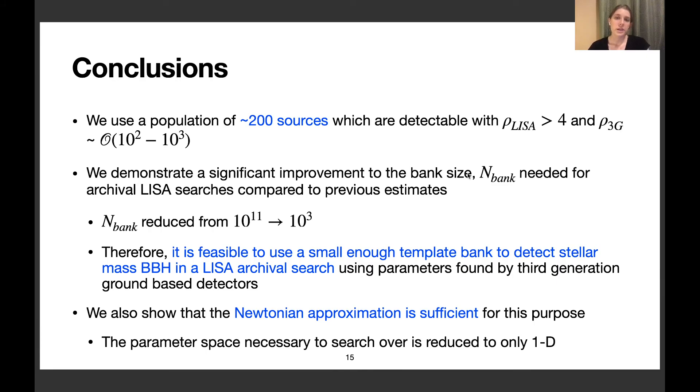To conclude, we used a population of about 200 sources detectable with LISA SNR greater than 4 and 3G SNR around 100 to thousands. We demonstrate a significant improvement over the bank size needed for archival LISA searches compared to previous estimates, reducing from about 10^11 templates to only 10^3 templates.